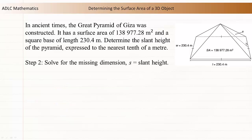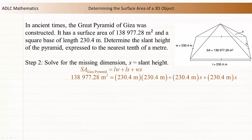Step 2: Solve for the missing dimension, S, which is the slant height. 138,977.28 m² is equal to 230.4 m times 230.4 m, plus 230.4 m times S, plus 230.4 m times S. This simplifies to 138,977.28 m² is equal to 53,084.16 m² plus 460.8 m times S.